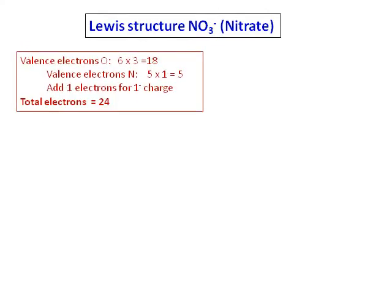We are doing the resonance structure of nitrate. First we will do the Lewis structure by counting the number of valence electrons. We have 24, with one added for the charge on nitrate, and deciding on the central atom.